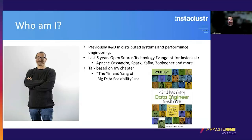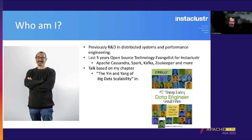I've spent several decades in R&D, distributed systems, and performance engineering. For the last five years I've been the open source technology evangelist for Instacluster, based in Canberra, learning new open source technologies such as Apache Cassandra, Spark, Kafka, Zookeeper, and more. This talk is based on a chapter in a book called '97 Things Every Data Engineer Should Know,' published by O'Reilly, titled 'The Yin and Yang of Big Data Scalability.'